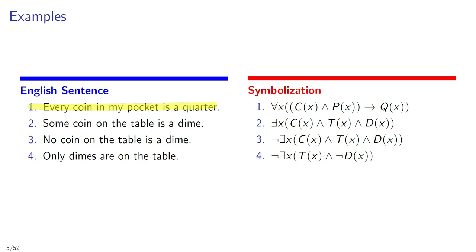Let's look at a few examples. Suppose you want to symbolize the sentence 'Every coin in my pocket is a quarter.' Using a symbolization key where C means 'is a coin,' P means 'is in my pocket,' and Q means 'is a quarter,' we can symbolize this sentence by means of the universally quantified sentence: for all X, if Cx and Px then Qx.